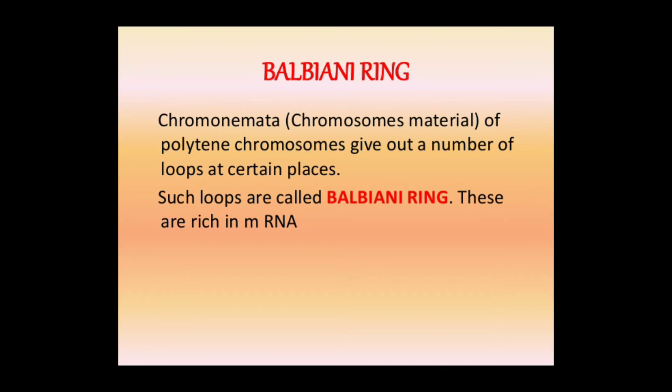Balbiani ring: because of the band and inter-band structure, the bands look like a ring-like structure, which we call the Balbiani ring — named after the discoverer of polytene chromosomes, Balbiani. The chromonema of polytene chromosomes gives out a number of loops at certain places. Such loops are called Balbiani rings, and they are rich in mRNA.